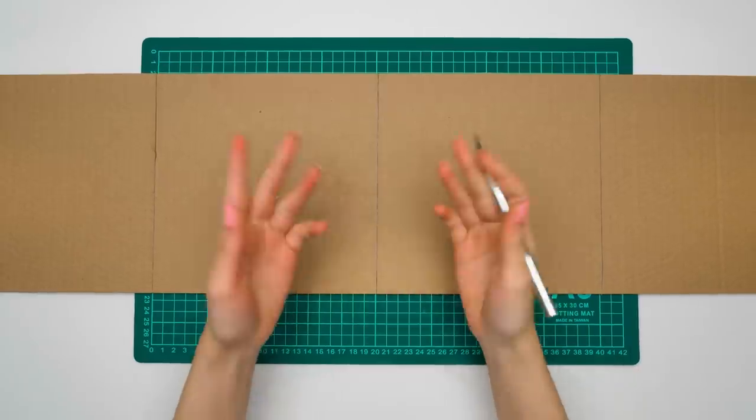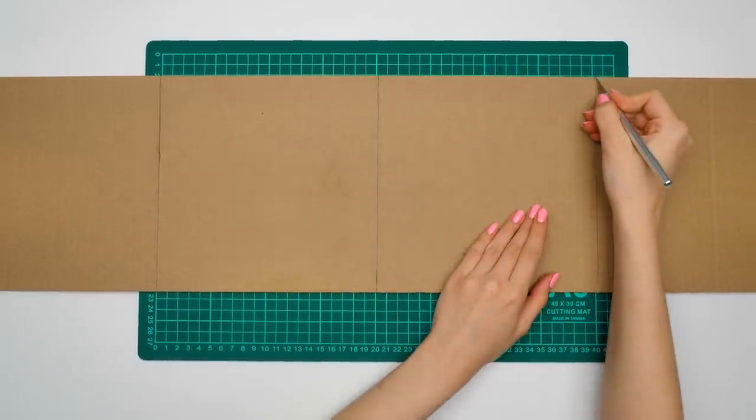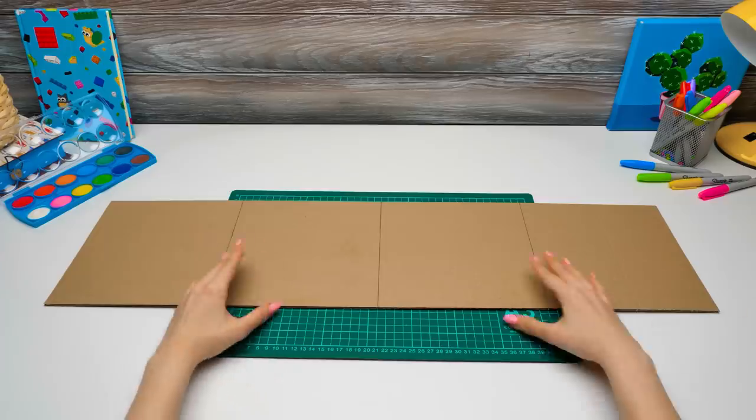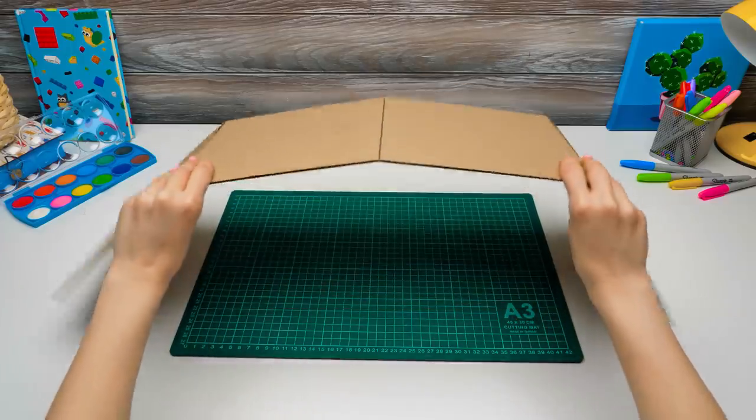Keep going, guys! Only two folds are left! Let's speed it up a little! Check this out! We made incisions on the outer side of the box and now we can fold the piece like this!